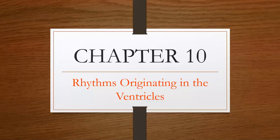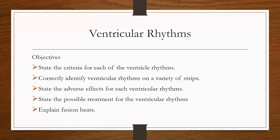Hi class. We're in chapter 10: rhythms originating in the ventricles. Your objectives for this chapter would be to state the criteria for each of the ventricular rhythms, correctly identify ventricular rhythms on a variety of strips, state the adverse effects and possible treatment for each ventricular rhythm, and explain fusion beats.